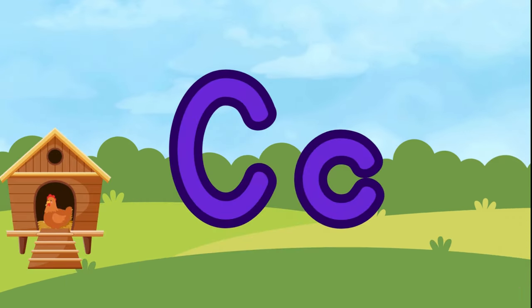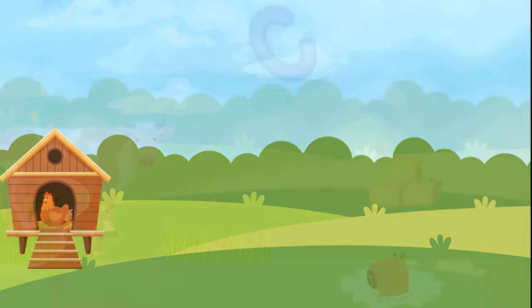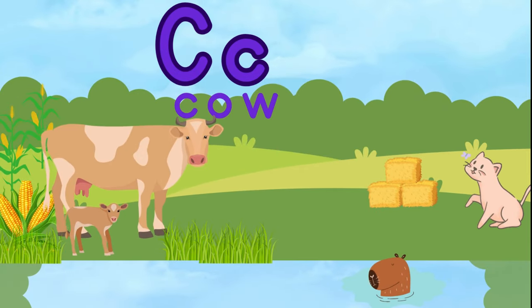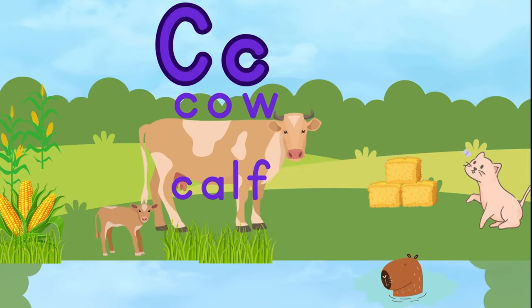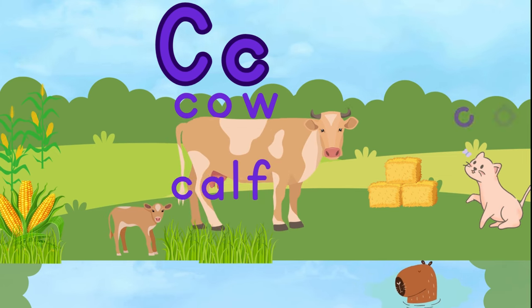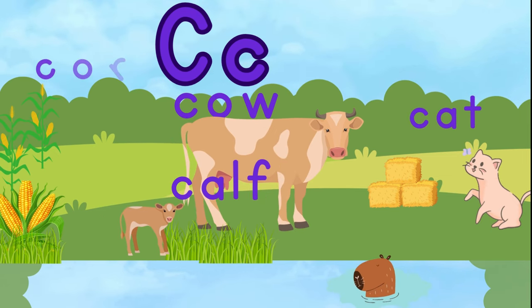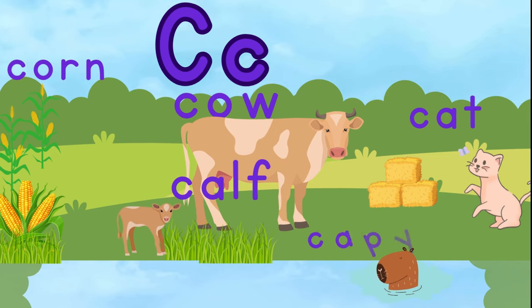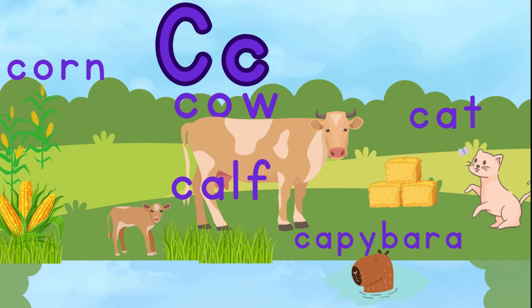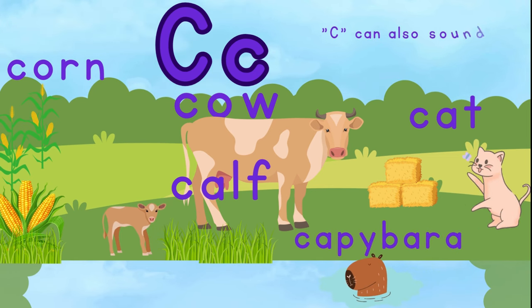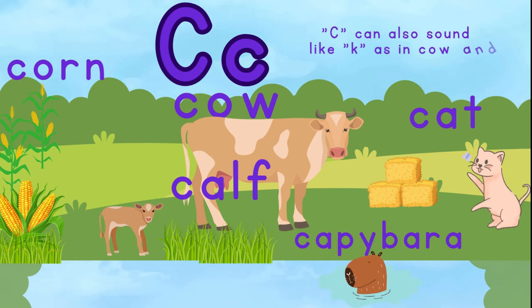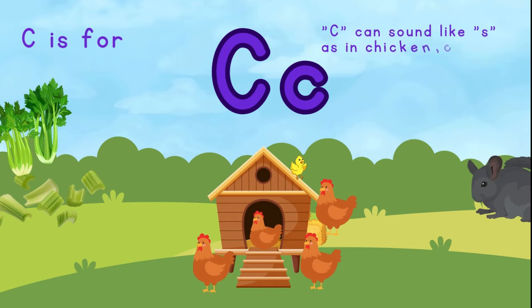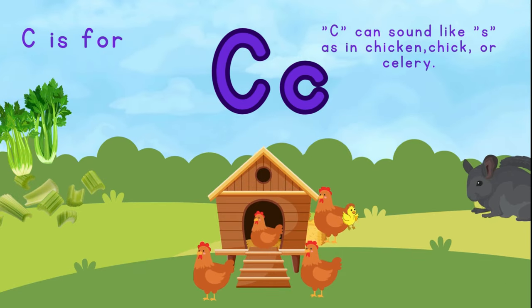This is the letter C. C is for cow. C is for calf. C is for cat. C is for corn. And C is for capybara. C can sound like K as in cow or corn. C can also sound like S as in chicken, chick, or celery.